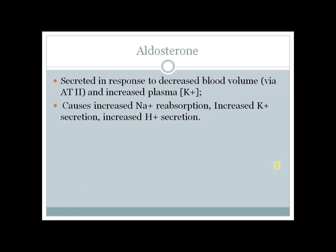To summarize aldosterone actions: aldosterone is released from the zona glomerulosa in response to decreased blood volume via angiotensin II and increased plasma potassium. Its main actions are increased sodium reabsorption, increased potassium secretion, and increased hydrogen secretion. Increased aldosterone results in raised blood pressure due to volume retention, hypokalemia, and metabolic alkalosis due to increased hydrogen secretion.